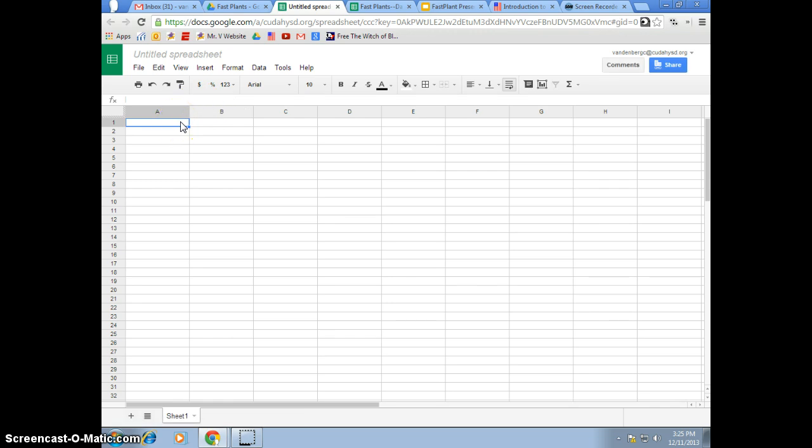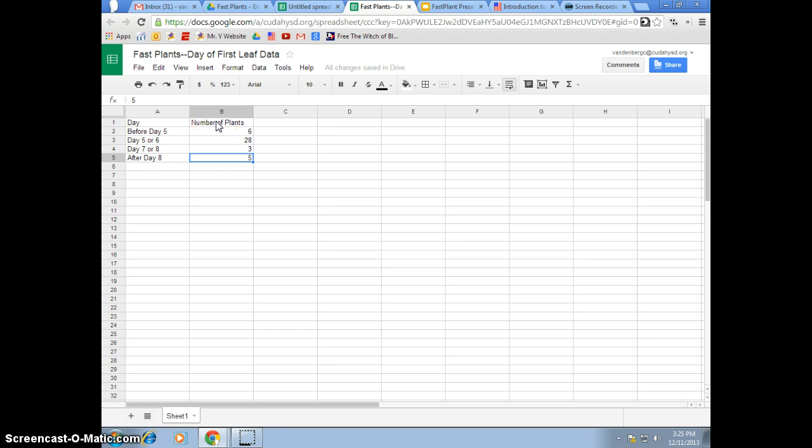We are talking about the date of the first leaf with our Fast Plants here. So when I do that, it is going to look like this. I am going to put day in column 1, or in row 1. I am going to put number of plants. So the total number of plants you have in your class. We are going to look at how many plants had their day of the first leaf within these parameters. I am going to put the parameters right here.